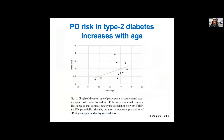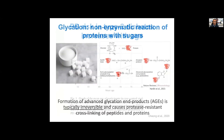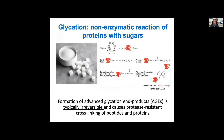We know that diabetes patients have increased risk for developing Parkinson's disease, and this is age-dependent, but we don't know the molecular connection between these two diseases. We think this may have to do, at least in part, with a modification called glycation.